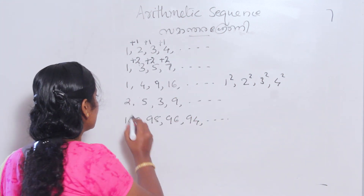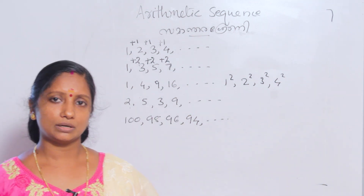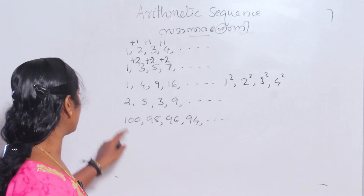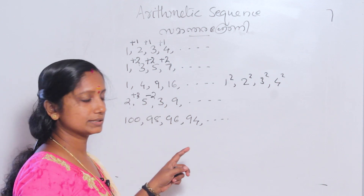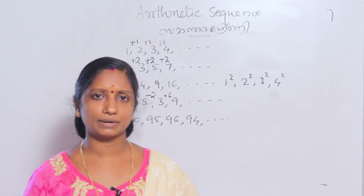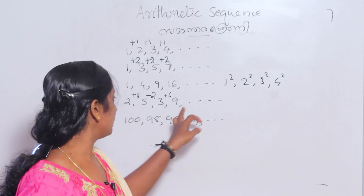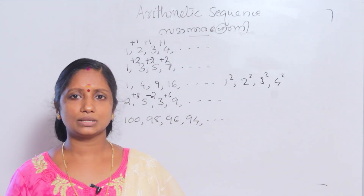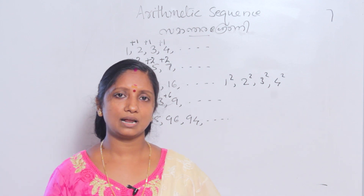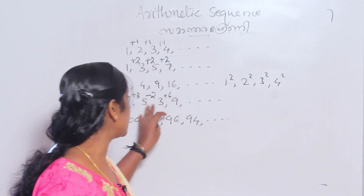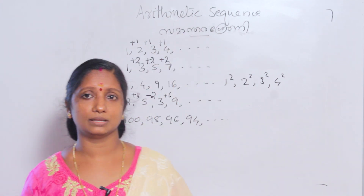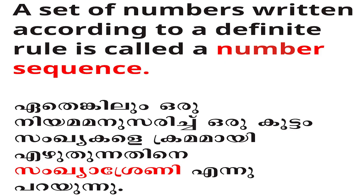The number sequence can be 2, 5, 3, 9, or 2, 8, 6, 8. We will show a common rule — a definite rule — seen in these sequences. Each set of numbers shown in a definite form depending on a rule is called the number sequence.